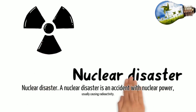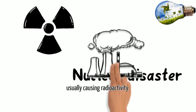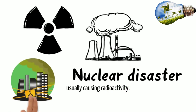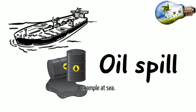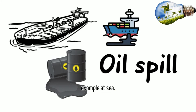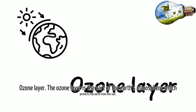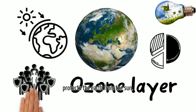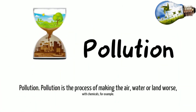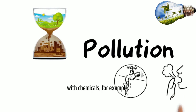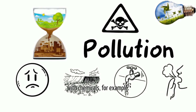Nuclear disaster. A nuclear disaster is an accident with nuclear power usually causing radioactivity. Oil spill. Oil spill is an accident when oil comes out of its container, for example at sea. Ozone layer. The ozone layer is the part of the Earth's atmosphere which protects the Earth from the Sun. Pollution. Pollution is the process of making the air, water or land worse with chemicals, for example.